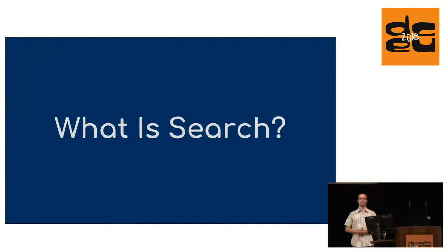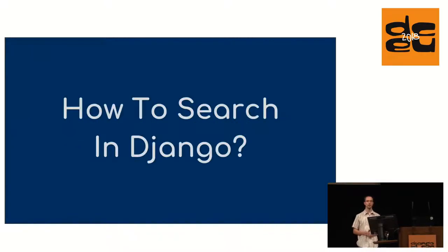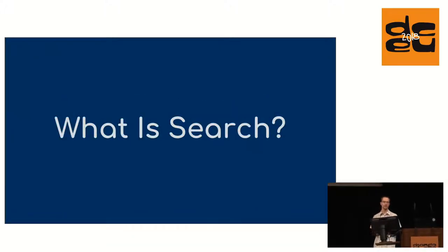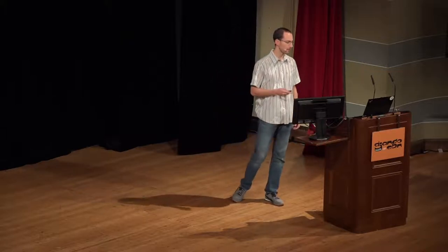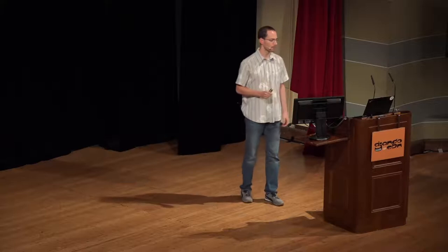Let me start off with asking: what is search? And how do we search in Django? When we look at the Oxford English Dictionary and use non-technical terms to define search, we find an explanation for the verb to search, which goes like: try to find something by looking and otherwise seeking carefully and thoroughly.